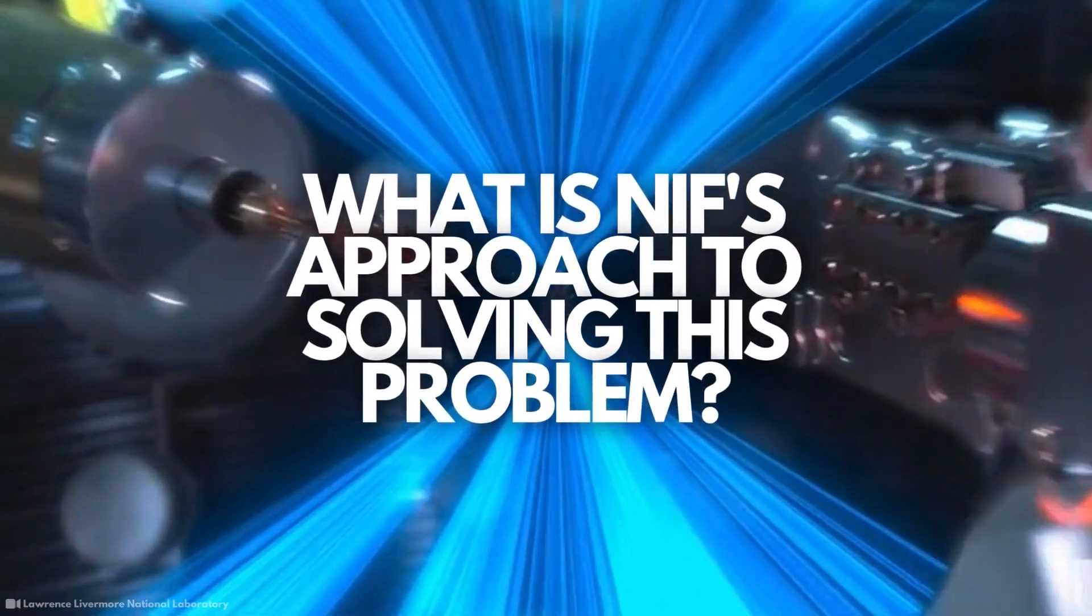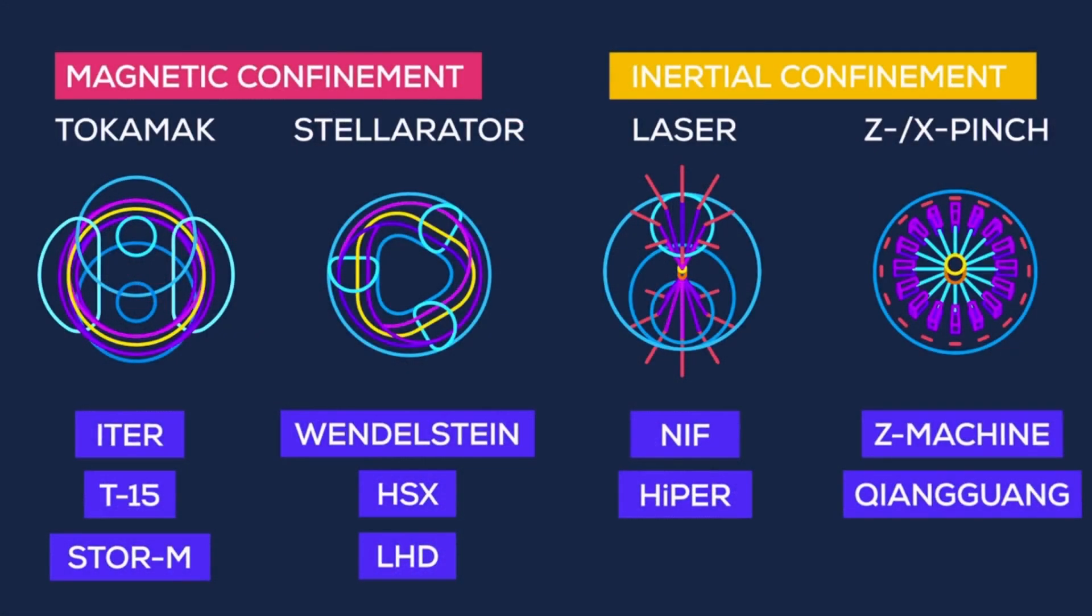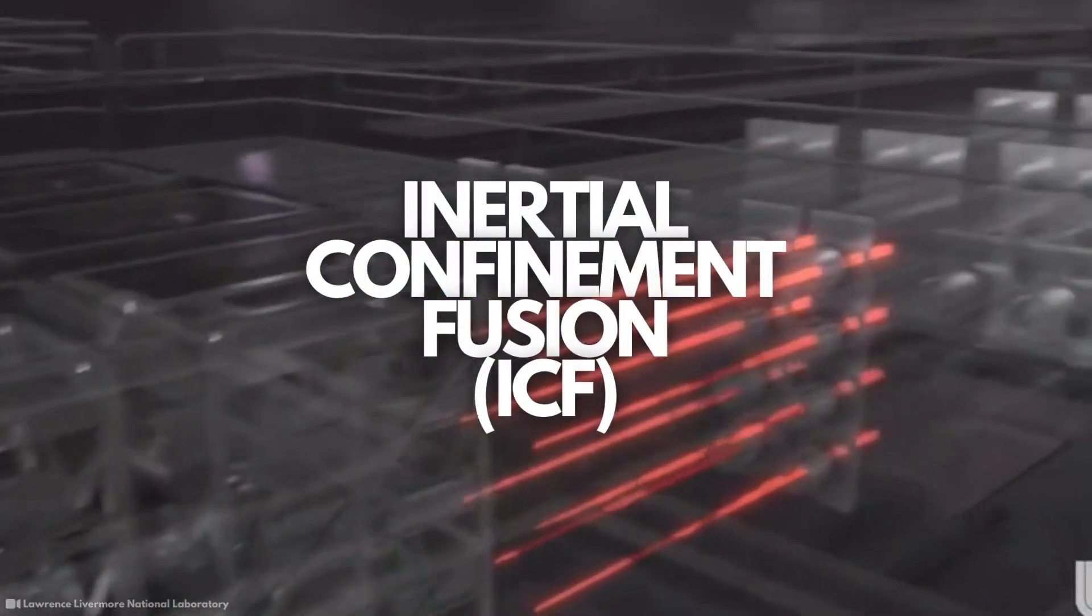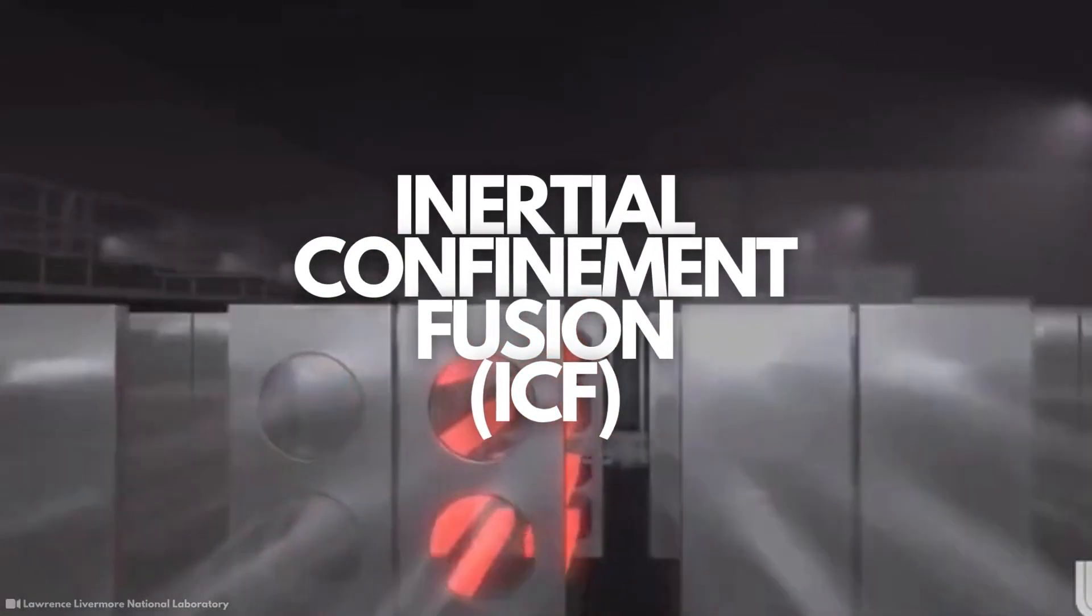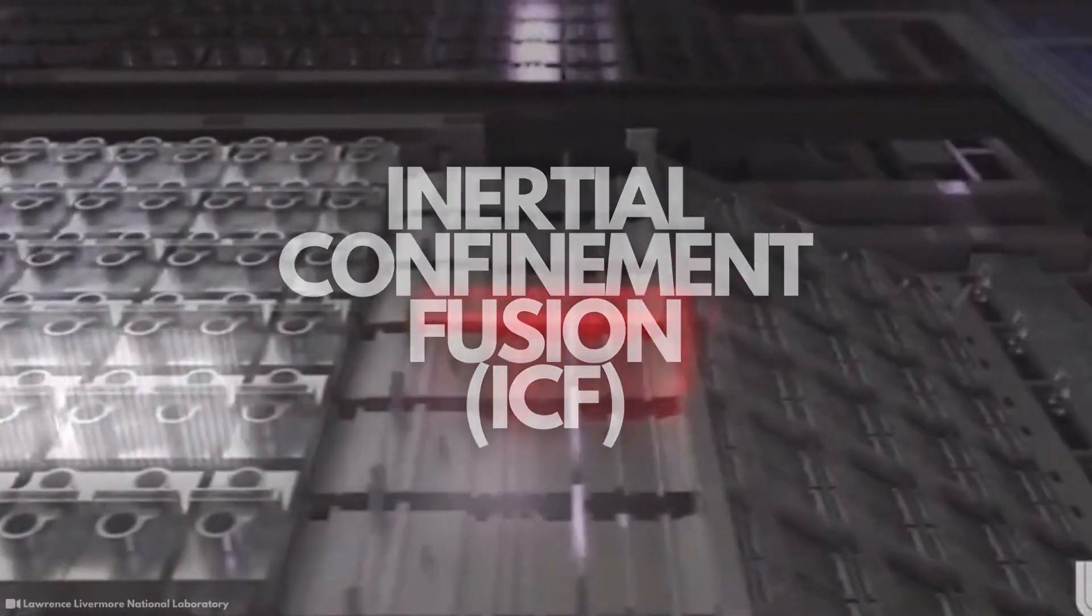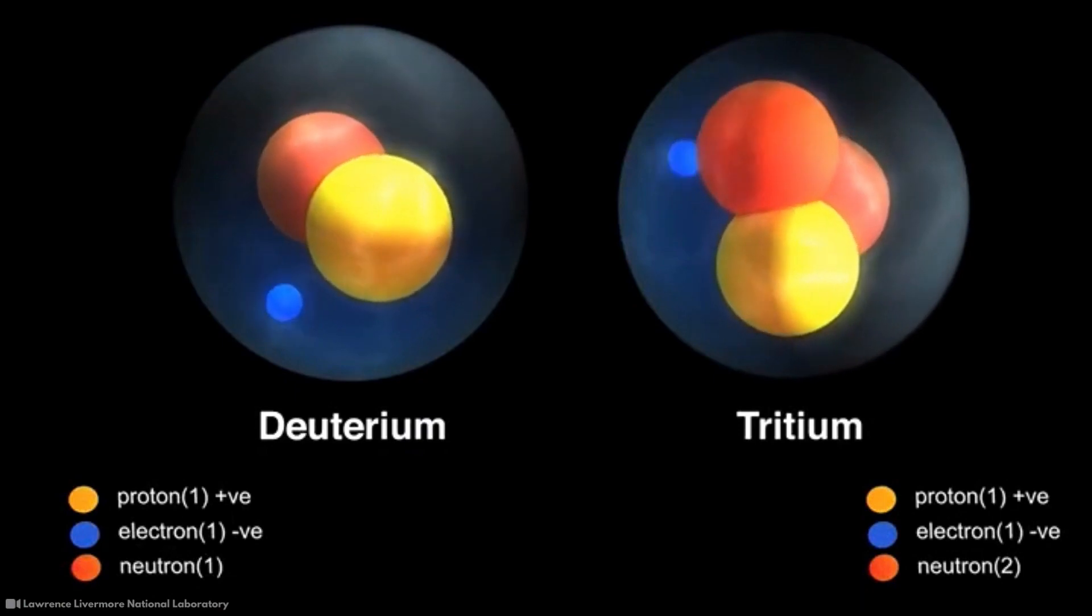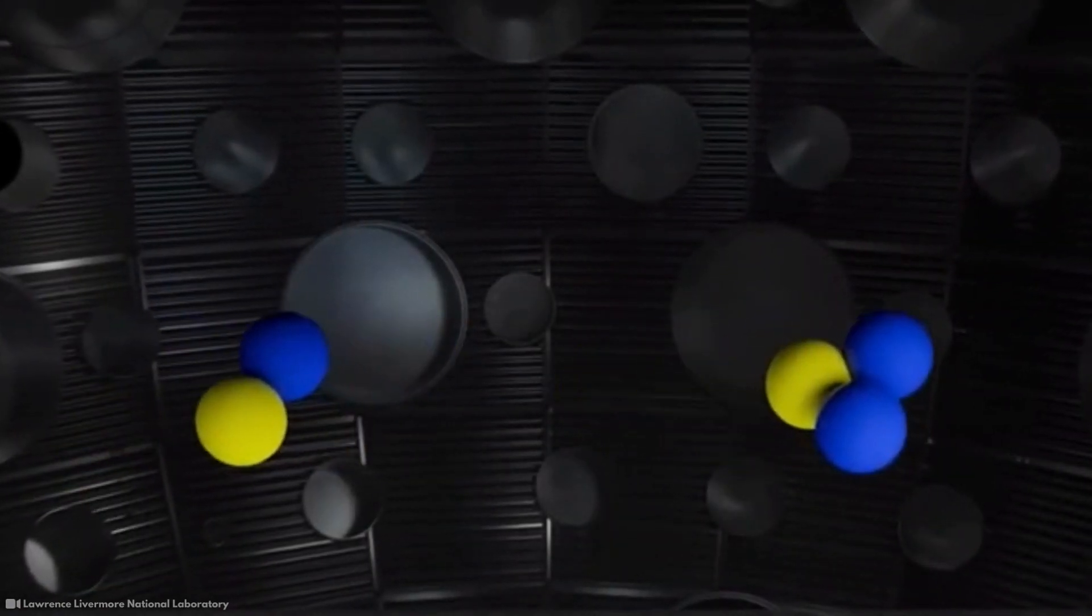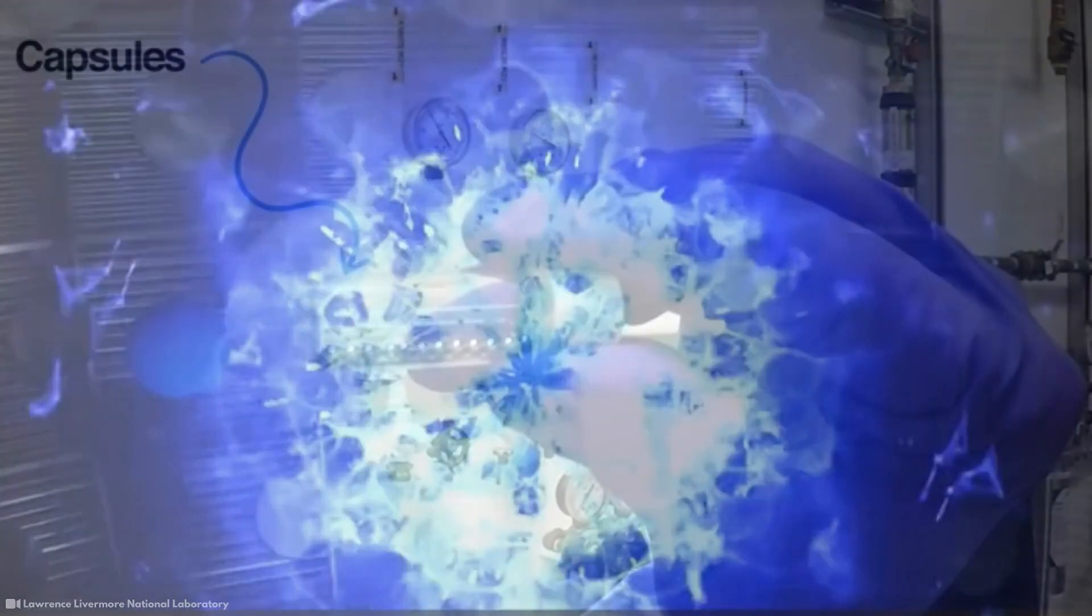What is NIF's approach to solving this problem? Many approaches have been tried to solve this problem. NIF's approach was inertial confinement fusion, shortened as ICF. To force two atomic nuclei to fuse, it is necessary to solve the problem of their mutual electrical repulsion.